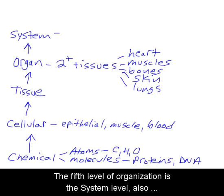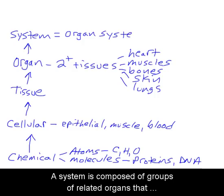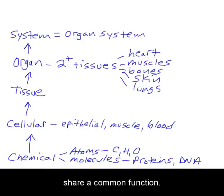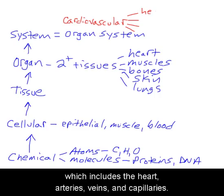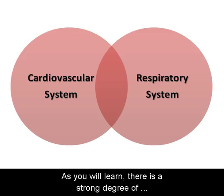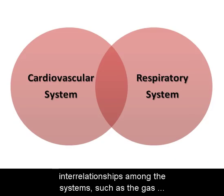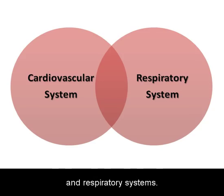The fifth level of organization is the system level, also called the organ system level. A system is composed of groups of related organs that share a common function. An example is the cardiovascular system, which includes the heart, arteries, veins, and capillaries. There is a strong degree of interrelationships among the systems, such as the gas exchange interactions between the cardiovascular and respiratory systems.